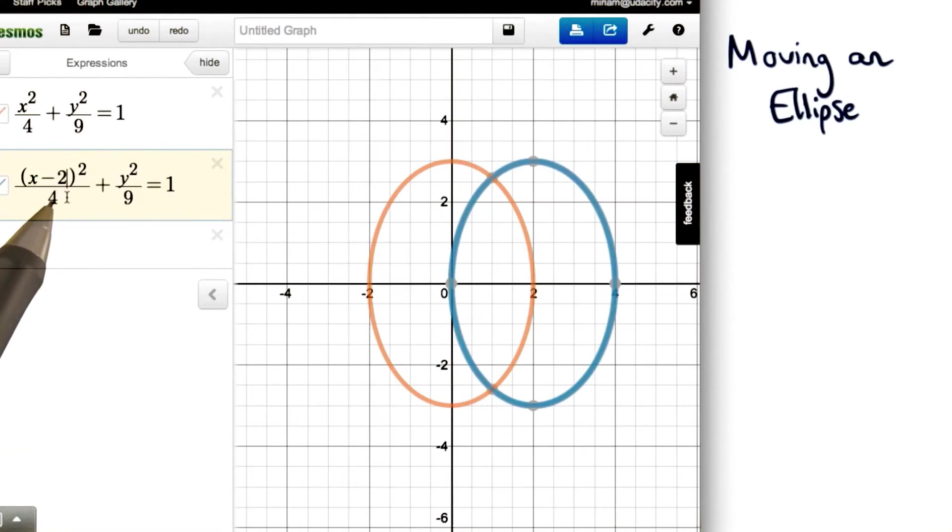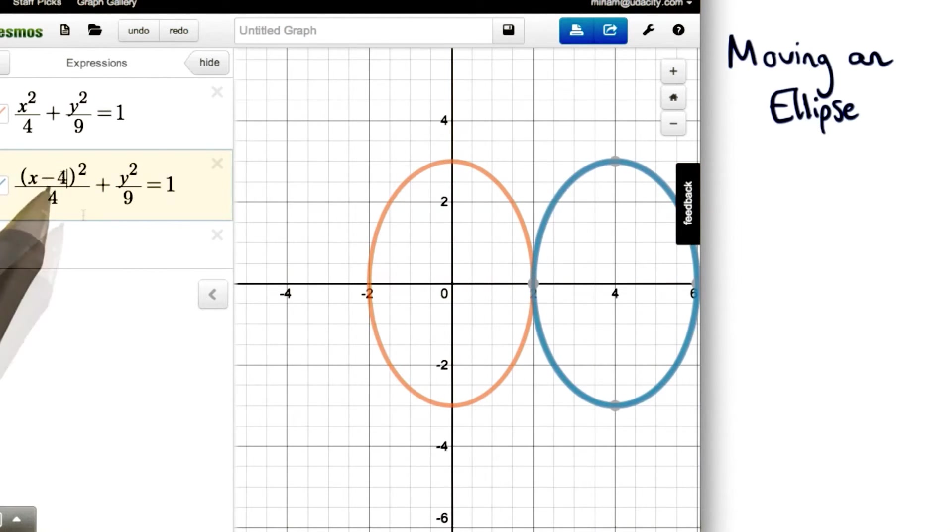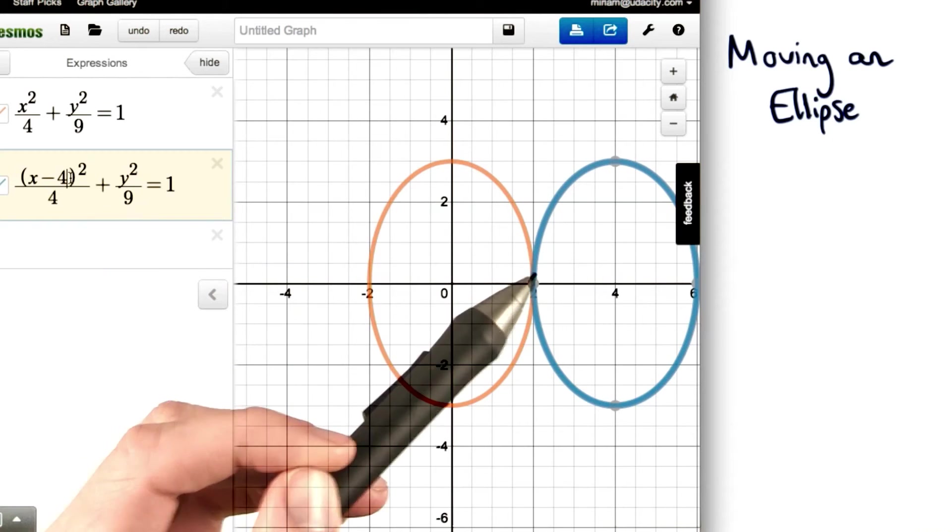And if we wanted to, we could shift two units to the right, three units to the right, or even four. And again, notice that this is a subtraction sign. So if it's a negative here, we're really moving to the right.